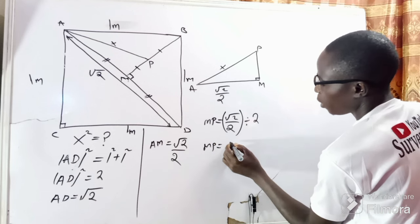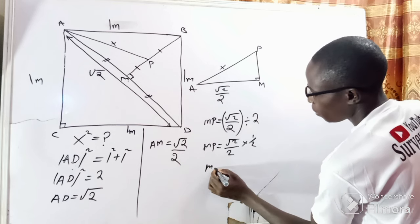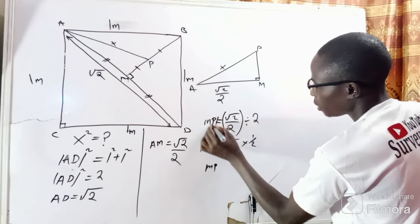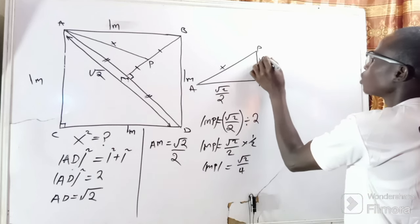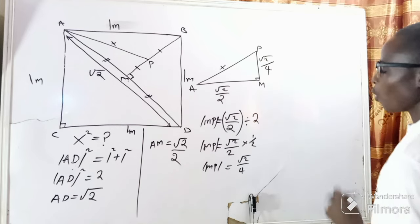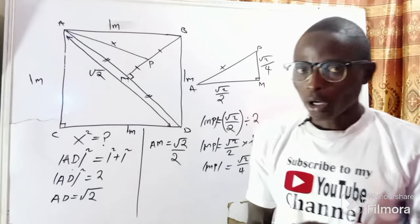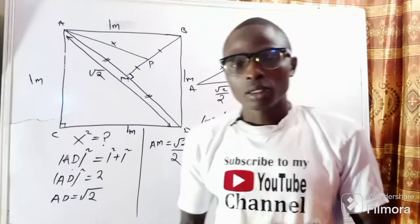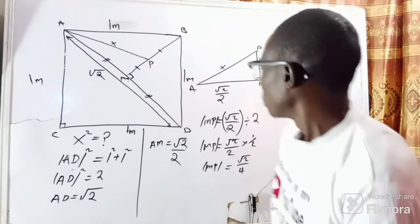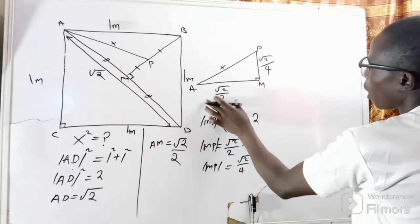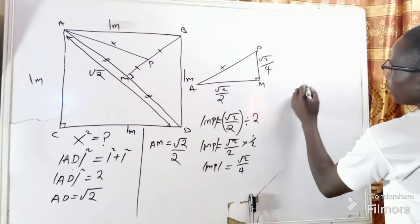Therefore MP equals the square root of two divided by two, divided by two — so MP equals the square root of two divided by four. We are now looking for x, and we still use the Pythagorean theorem: the square of the hypotenuse equals the sum of the squares of the opposite and adjacent sides.